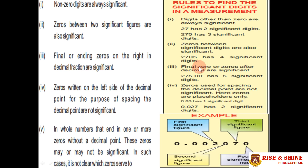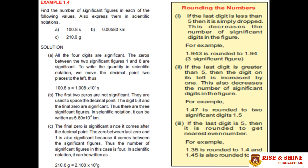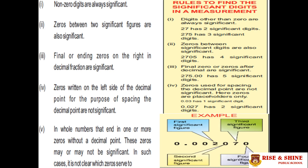Rule number three: final zeros after the decimal point are significant — for example, in 2.8500, the two trailing zeros are also significant, giving five significant figures total. Rule number four: zeros used only for spacing the decimal point are not significant — those zeros are placeholders only. For example, in 0.027, only 2 and 7 are significant; the two leading zeros are not significant.